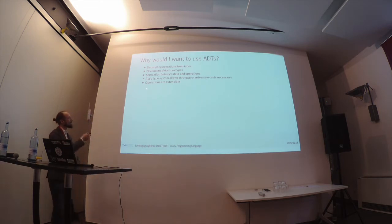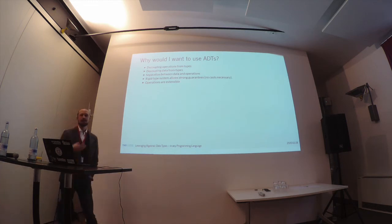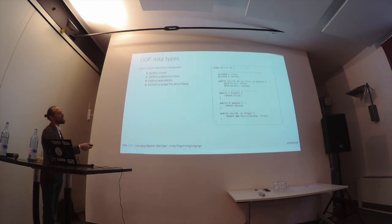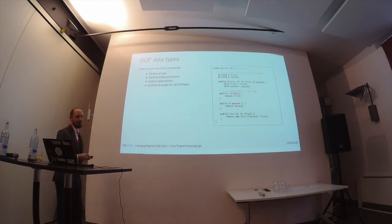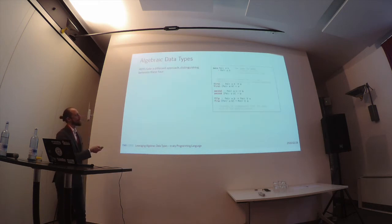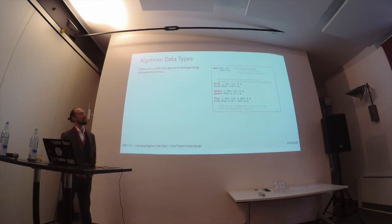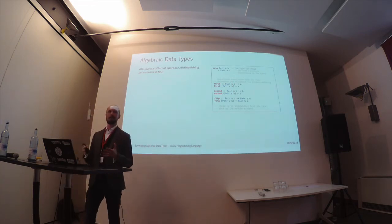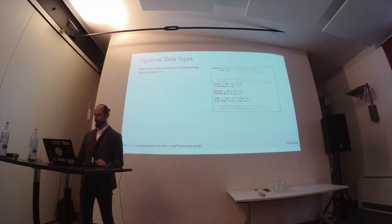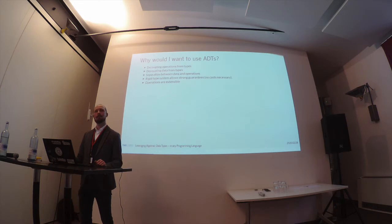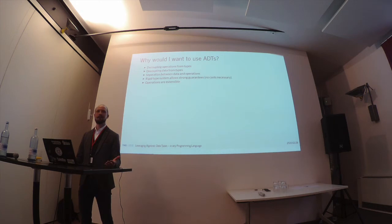A few disadvantages come with ADTs as well. In order to make operations extensible, you have to expose internal structure. In the Java example, we encapsulate and hide implementation details, whereas in the Haskell example, we expose it so everybody can use the internal structure. You could make it private to the module, but then you'd also lose extensibility to a certain amount.